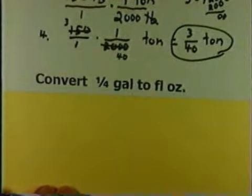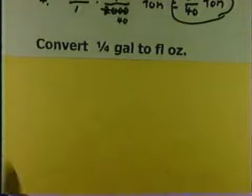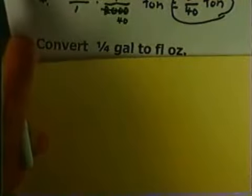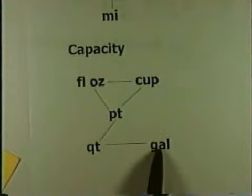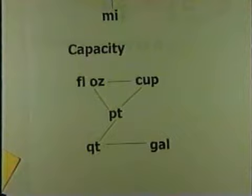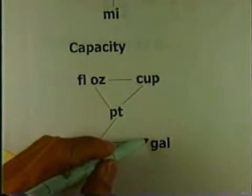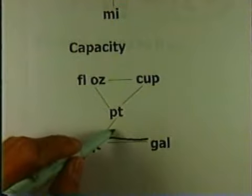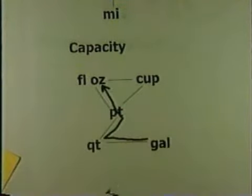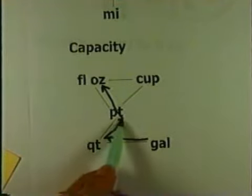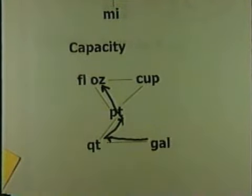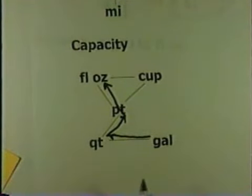Now convert 1/4 of a gallon to fluid ounces. I can't go straight from gallons to fluid ounces. Looking at the chart, I can go from gallons to quarts to pints to fluid ounces — so that will be my route. Gallons to quarts, quarts to pints, pints to fluid ounces. By following that route, I can get from gallons to fluid ounces.